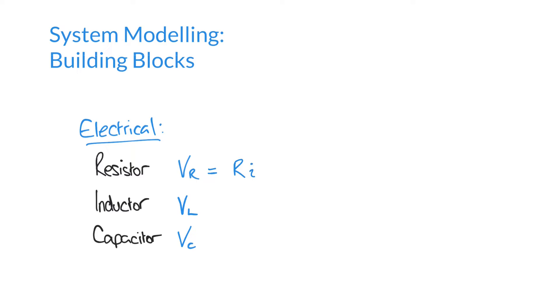For an inductor, Vl, we're going to say that Vl is equal to L, the inductance, multiplied by the derivative of current with respect to time or the rate of change of current. So we have Vl equals L di by dt.